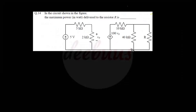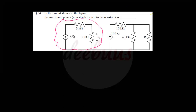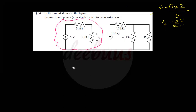Moving to the next question: in the circuit shown, we must calculate the maximum power in watts delivered to resistor R. The left portion of the circuit is used to calculate the dependent voltage source. Checking that portion: V₀ equals the voltage drop across 2 kΩ = 5 × 2k/(2+3) = 2 V. So V₀ = 2 V.